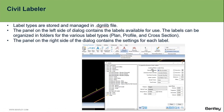The panel associated with this command is split into left and right sides. On the left side, you can choose the category of the several annotations that you can create, arranged according to cross section, plan, and profile. On the right side of the panel, you can find the dialog containing the settings for each label.